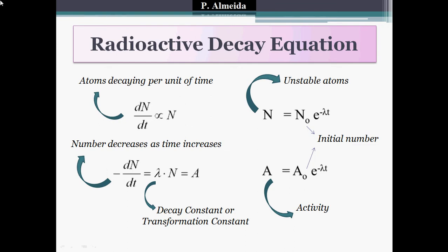If I do simple maths with either of these two formulas, I can get to these ones. N, the number of unstable atoms, equals N₀ — the initial number at time zero — times the exponential of minus lambda·T, where lambda is the decay constant and T is the time in seconds. Similarly, A, the activity at time T, equals A₀, the initial activity, times the exponential of minus lambda·T. Knowing this formula is super important for any radioactive decay exercise.